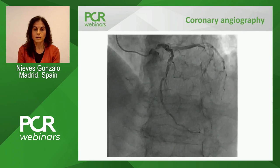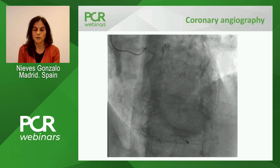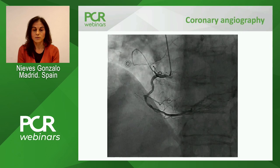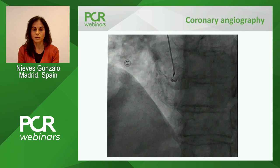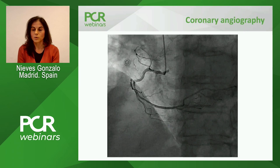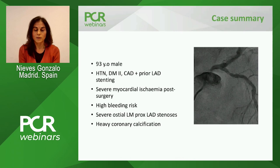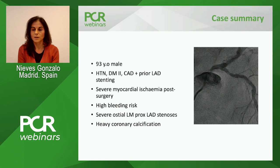This LAO cranial view shows how tight the ostial left main stenosis was. On the right, he had some stenosis at the level of the ostium but really not significant, and also some disease distally, but no significant stenosis. In summary, our patient is a 93-year-old male with risk factors and previous coronary disease with previous stenting in the LAD and circumflex. He had now severe myocardial ischemia post-surgery with high bleeding risk. The angiogram shows a very severe ostial left main and proximal LAD stenosis with heavy coronary calcification.